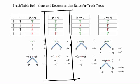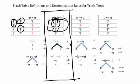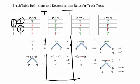Looking at disjunction, the truth table shows three lines where the disjunction is true and only one line where it ends up being false. To graphically represent the truth conditions for p∨q, we branch: either p is true or q is true. Whenever p is true the whole thing is true, and whenever q is true the whole thing is true, so the truth conditions for p∨q are represented by branching with p on one side and q on the other.